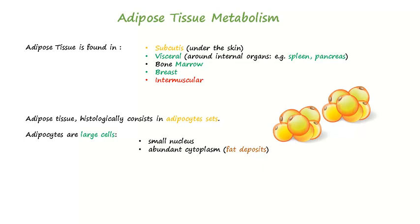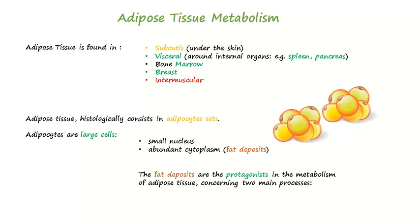The fatty deposit is the main protagonist in adipose tissue metabolism, concerning two main processes: lipolysis and lipogenesis.